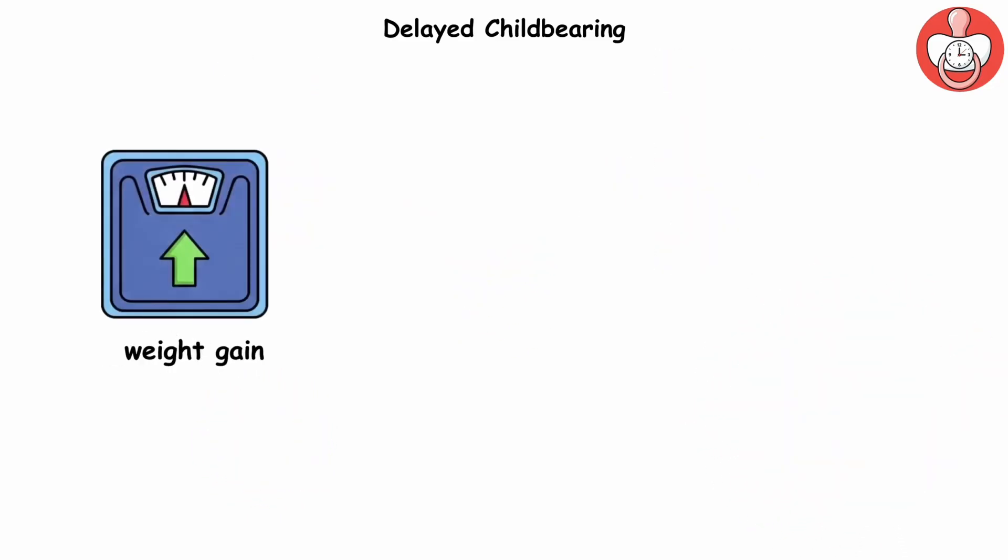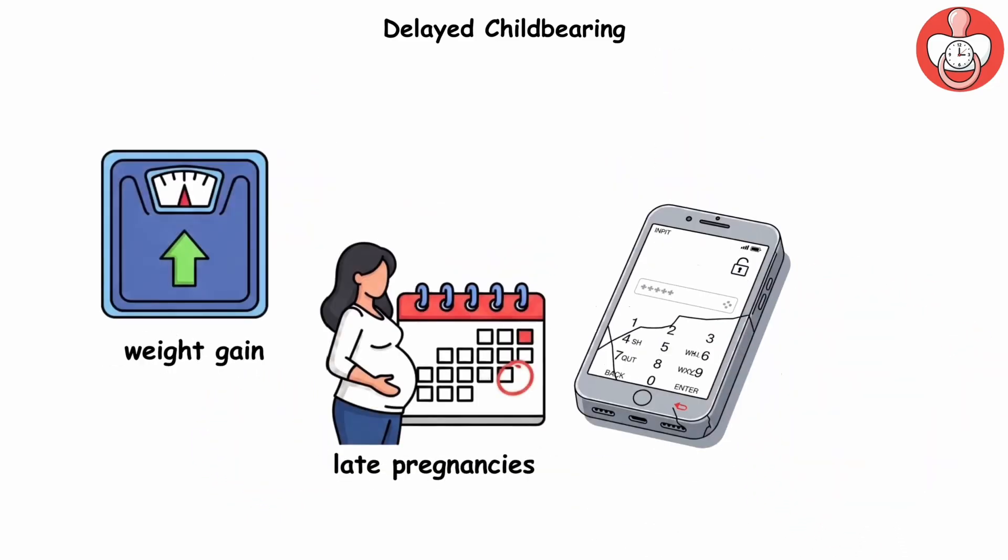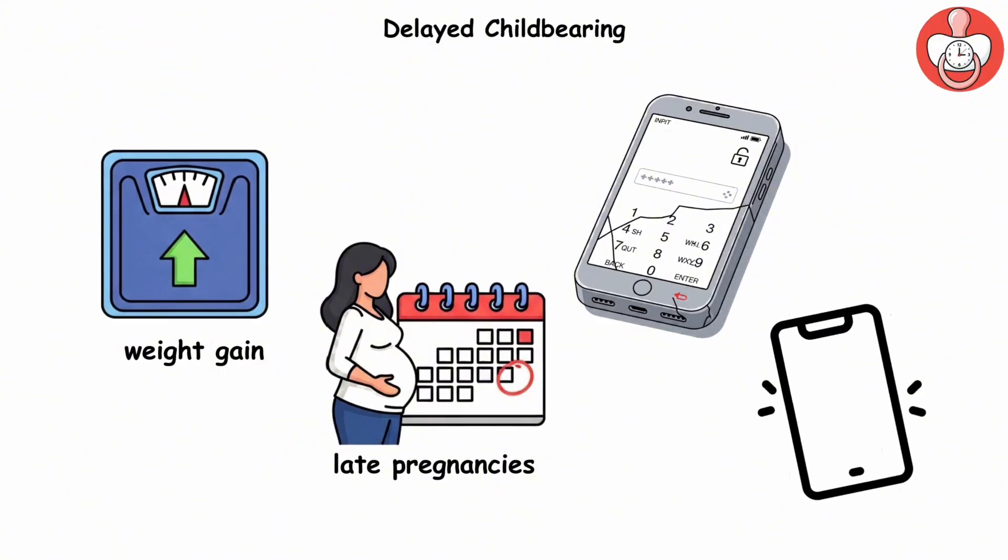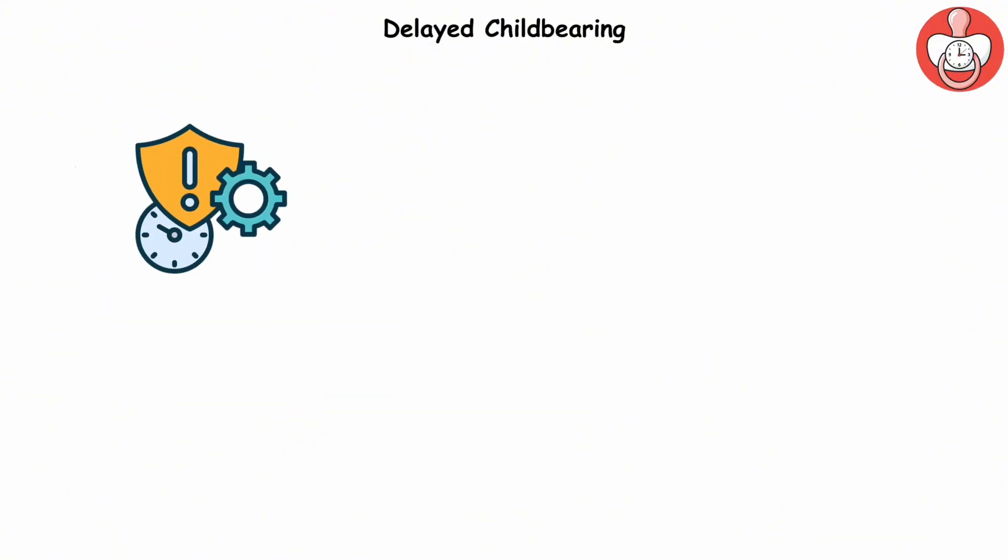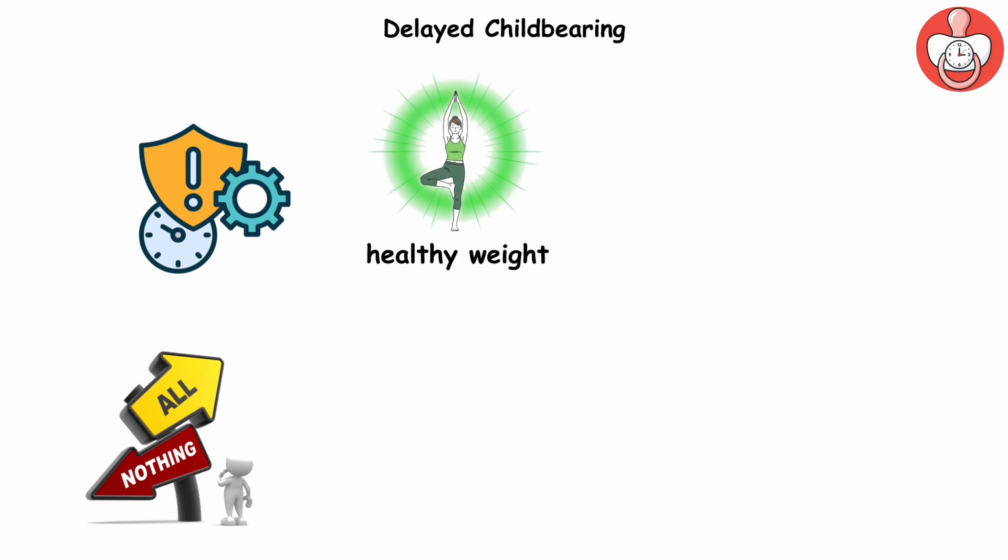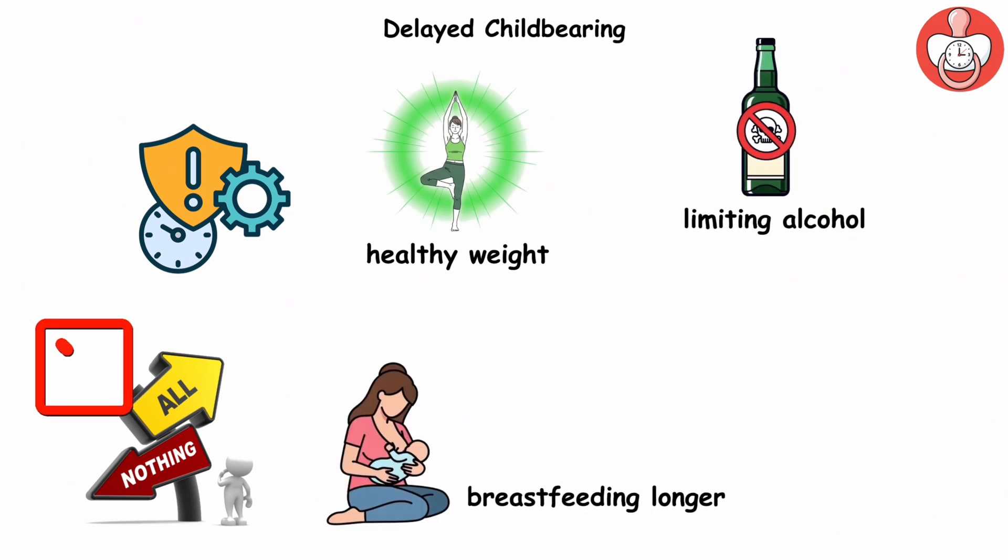Add in significant weight gain or late pregnancies. And it's like running that outdated phone without a password, leaving your system exposed to malware. Mitigation isn't all or nothing. Maintaining a healthy weight, limiting alcohol, and breastfeeding longer can all act like extra updates to strengthen your body's defenses.